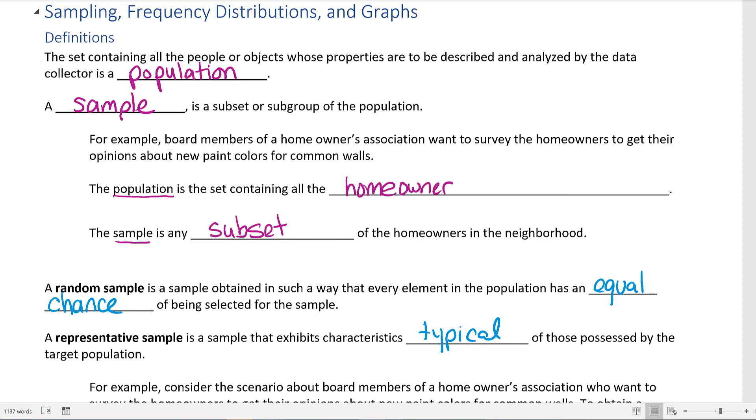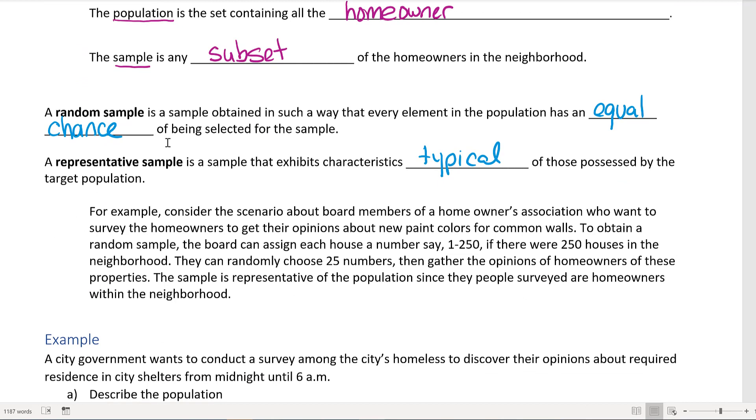Consider the board members of the homeowners association who want to survey homeowners about paint colors. To obtain a random sample, the board can assign each house a number, say 1 through 250. They would randomly choose 25 numbers which are associated with the 250 houses, then gather the opinions of just those properties.